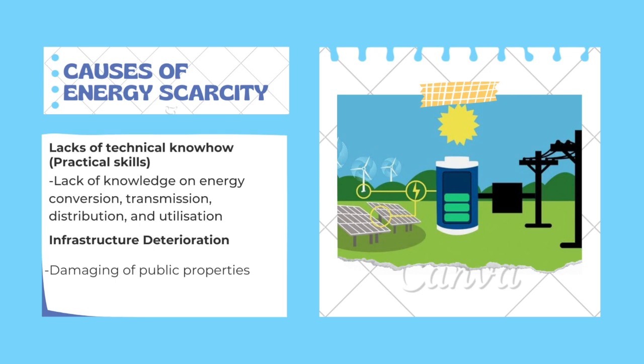The next factor affecting energy scarcity is lack of technical know-how, that is practical skills. This includes lack of knowledge on energy conservation, transmission, distribution, and utilization. People need to know how to utilize energy properly, and how the transmission of energy can be done evenly.